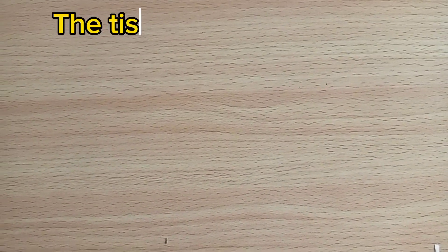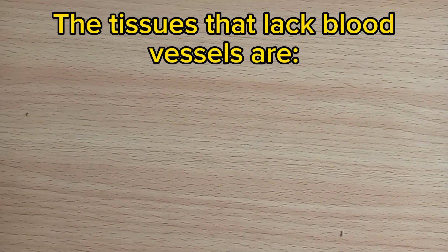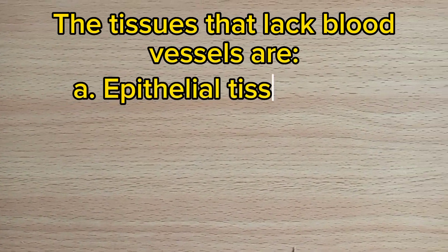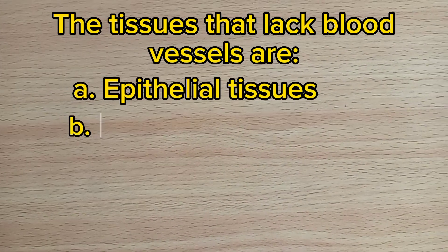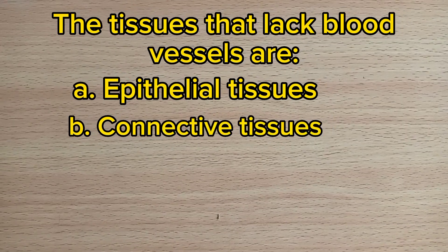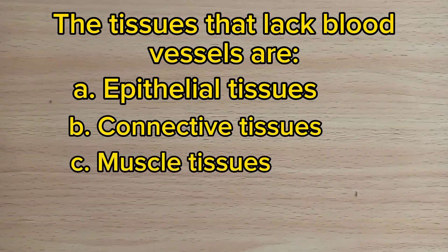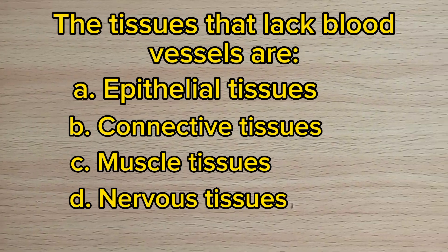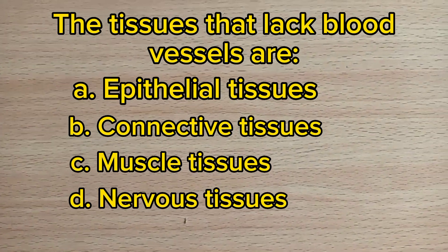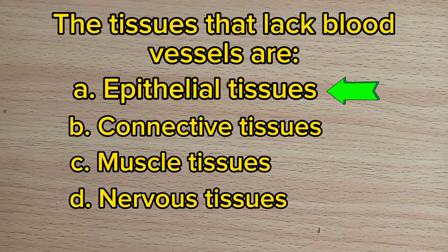Number 5. The tissues that lack blood vessels are: A. Epithelial tissues. B. Connective tissues. C. Muscle tissues. D. Nervous tissues. Answer: A. Epithelial tissues.